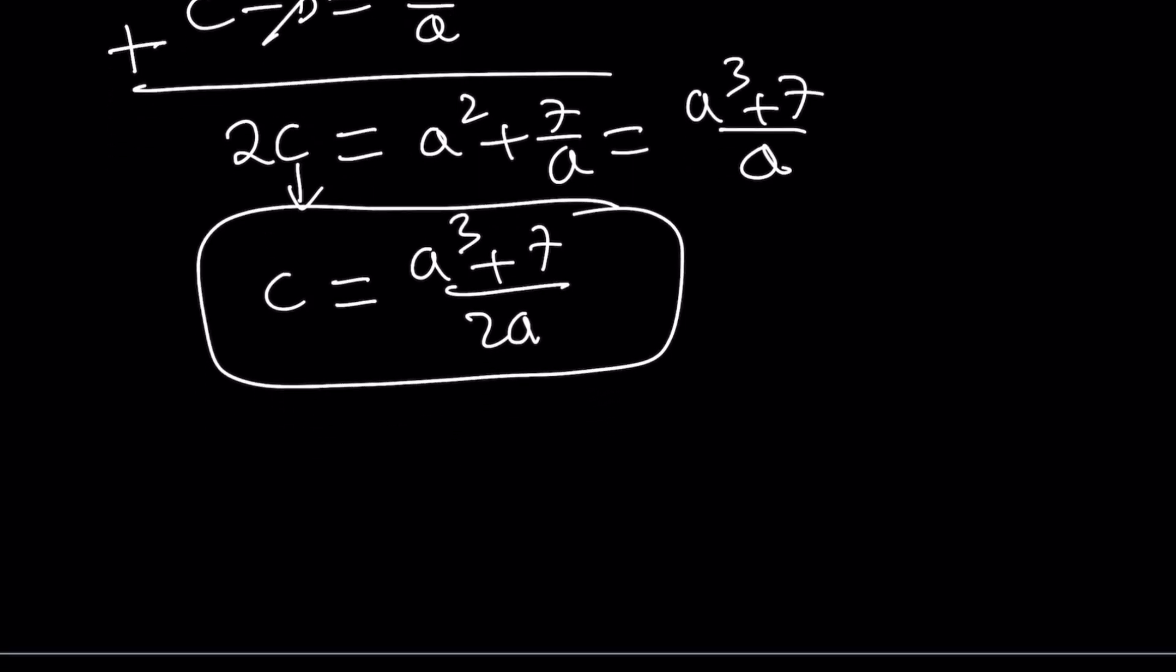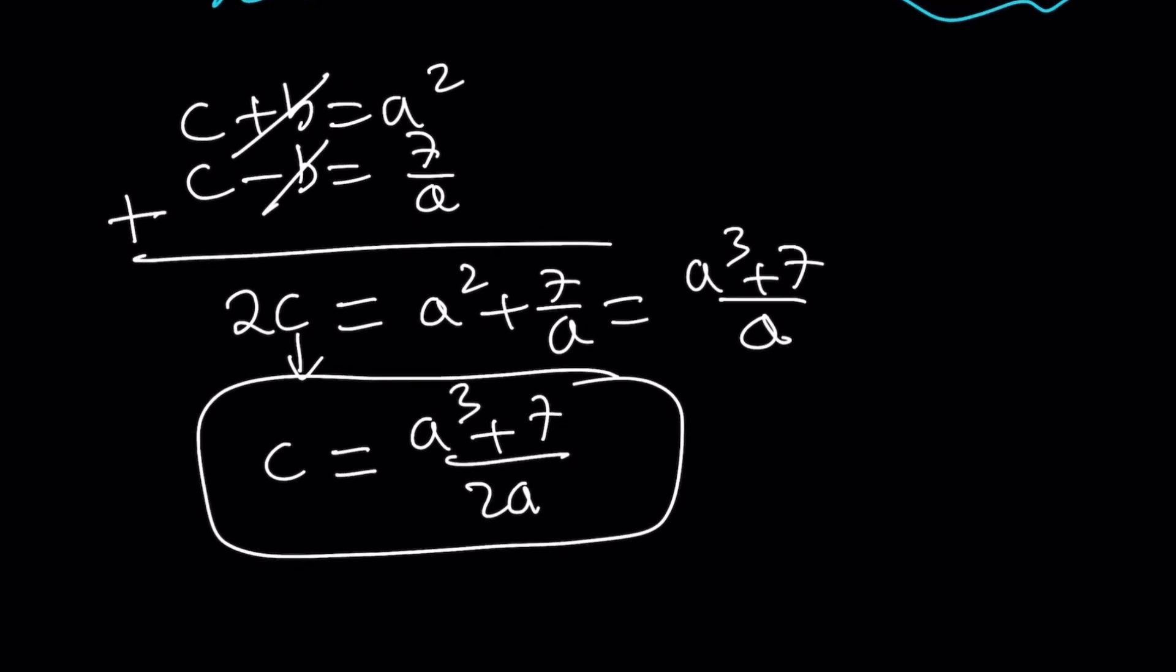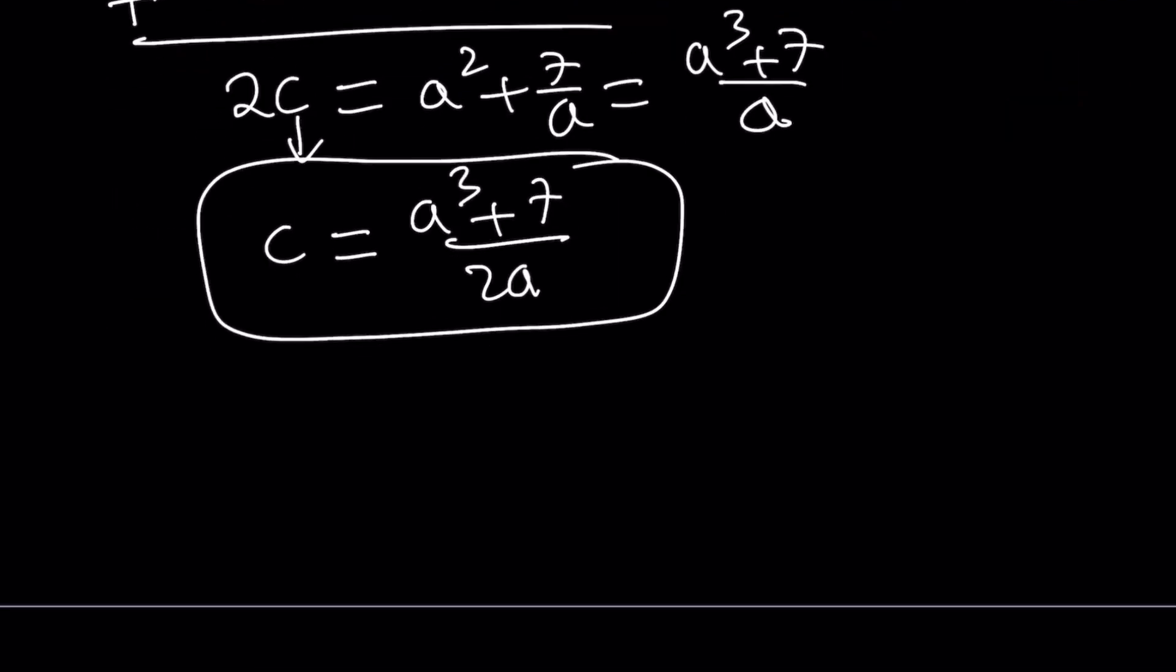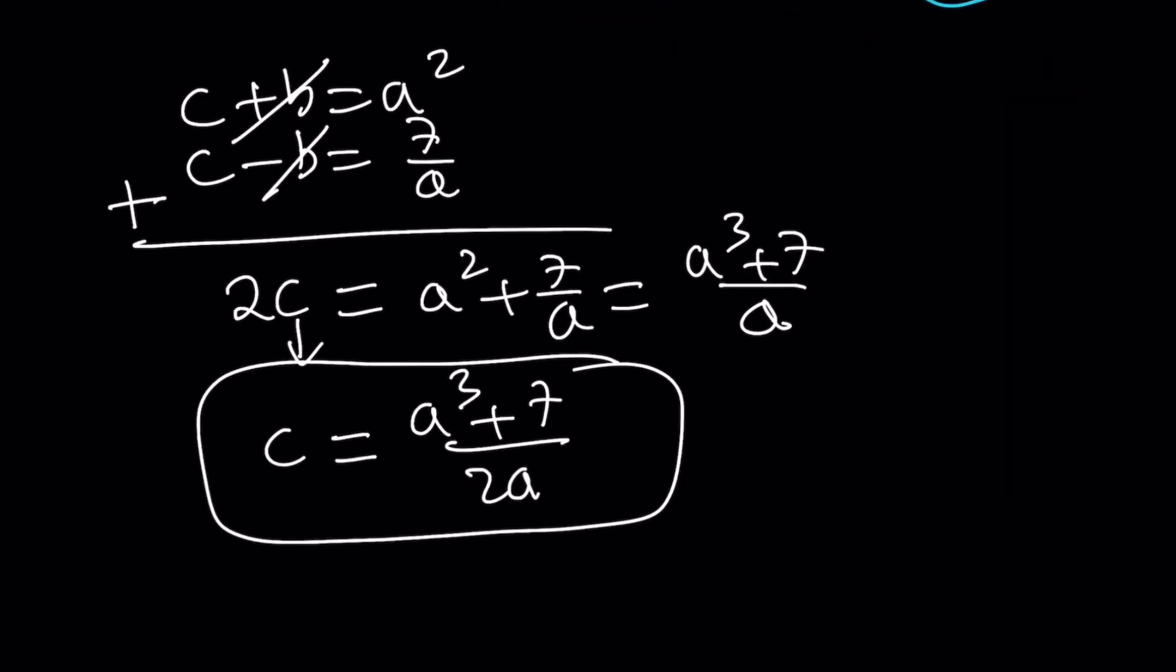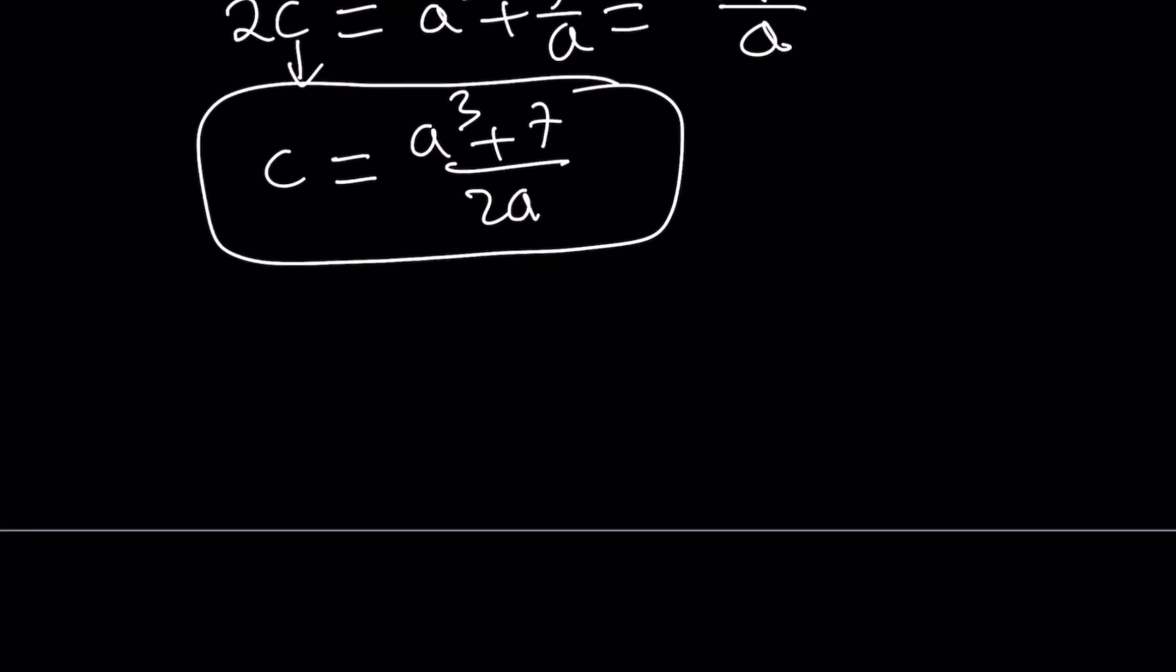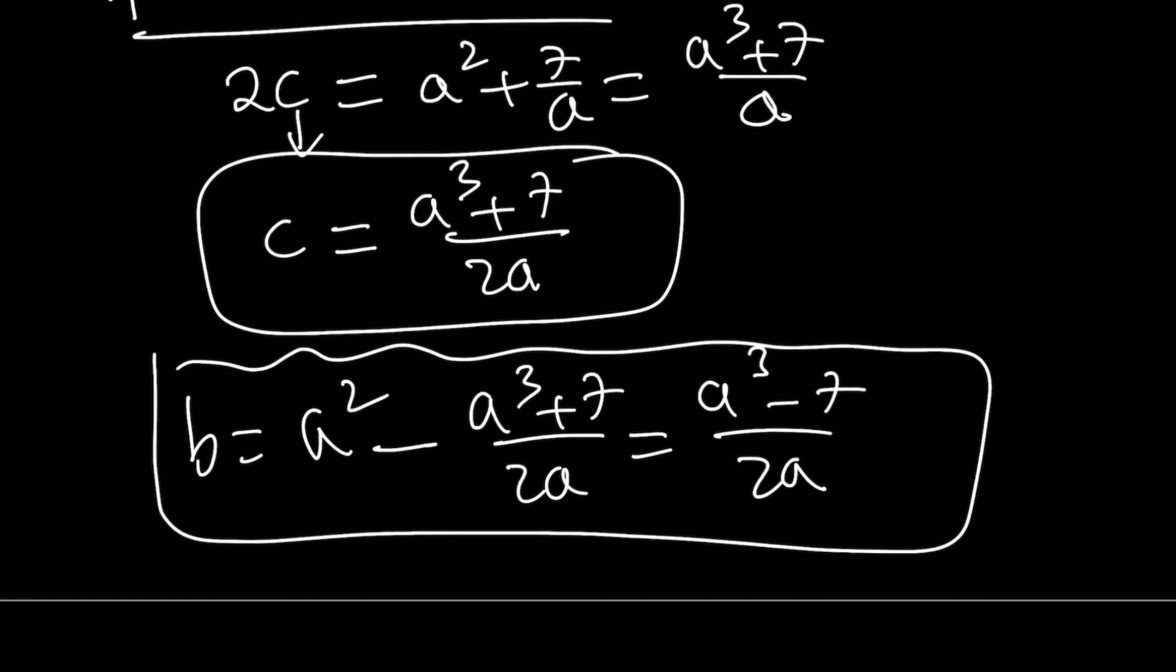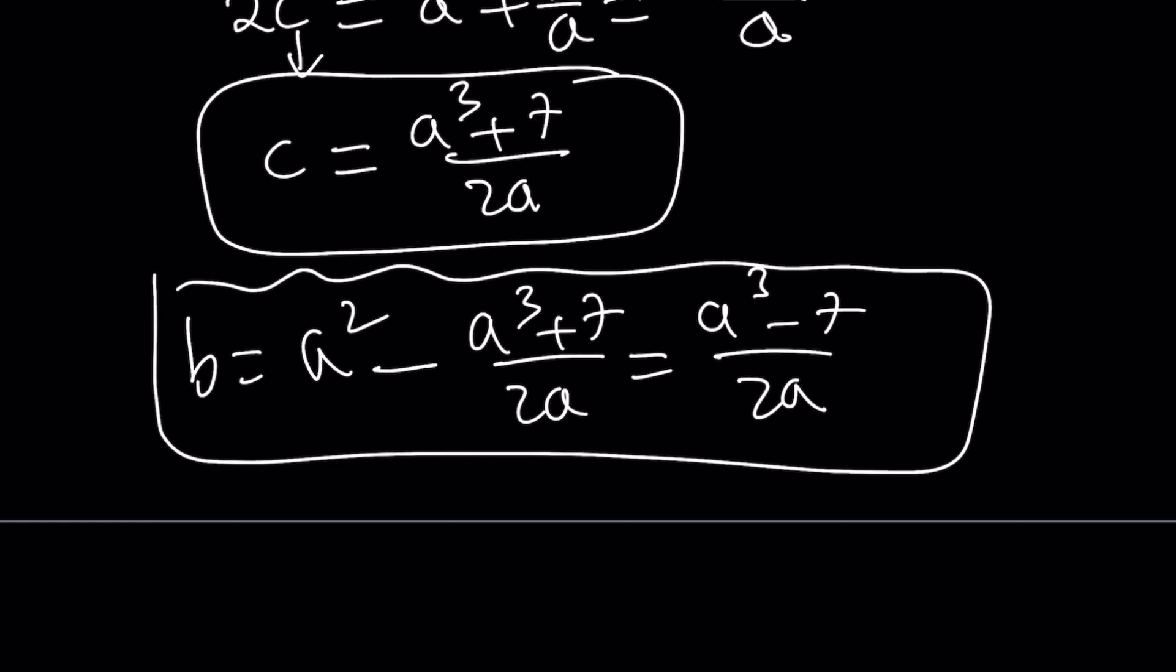I got c in terms of a, and I would like to find b in terms of a as well. But that's easy because we know that c plus b is a squared. In other words, b is a squared minus c. I can write b as a squared minus a cubed plus 7 over 2a. Distributing, you get 2a cubed minus a cubed minus 7 over 2a. For b, you get kind of like a conjugate looking term.